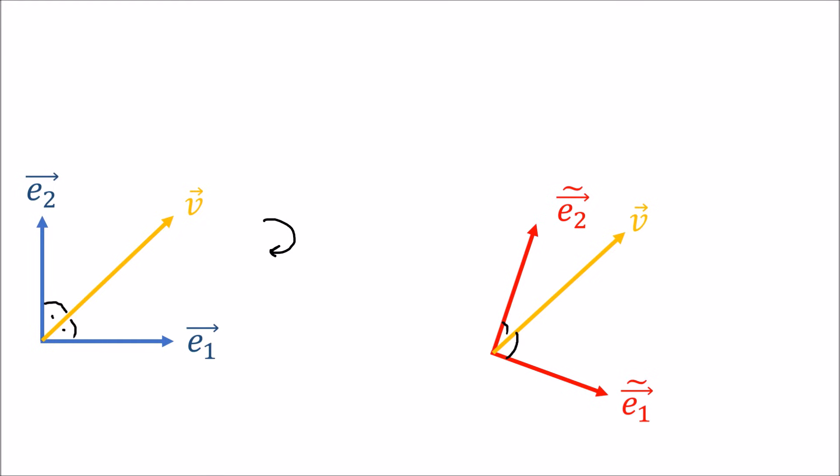So again, V is invariant, it hasn't moved. But now it's leaning closer to E2 tilde compared to E1 tilde. And that makes it feel like it's rotating counterclockwise, because the angle it makes with the second basis vector got smaller. So again, the components did the opposite thing. The basis rotated clockwise, and the components rotated counterclockwise.